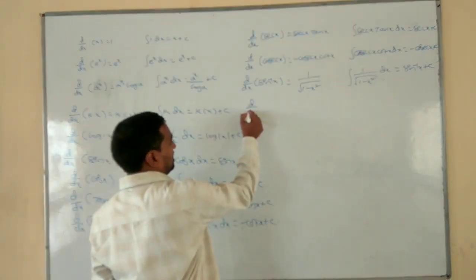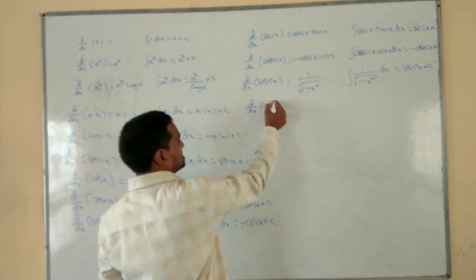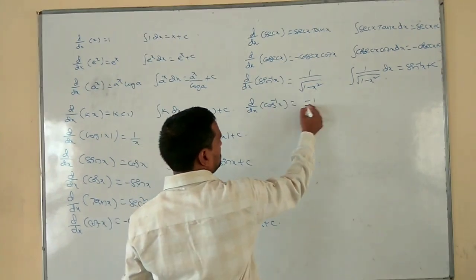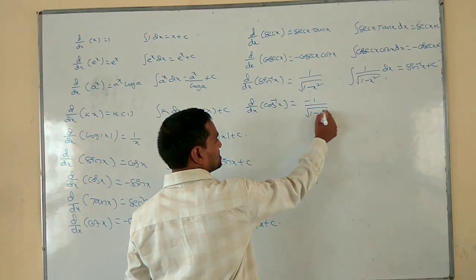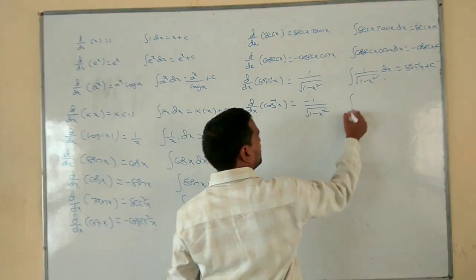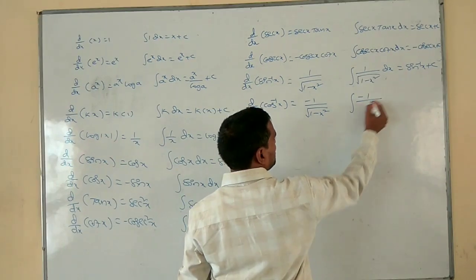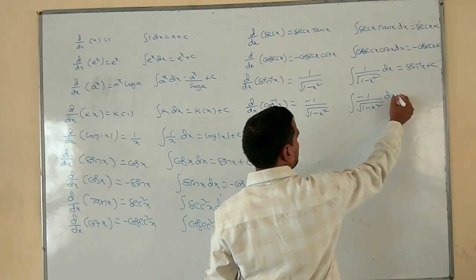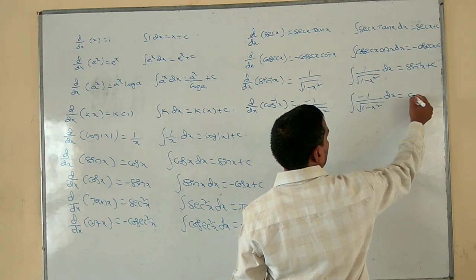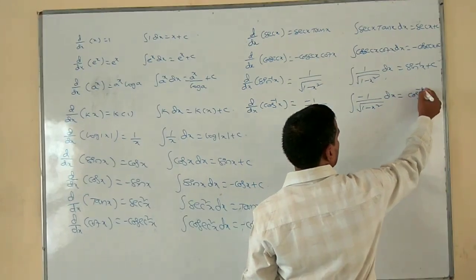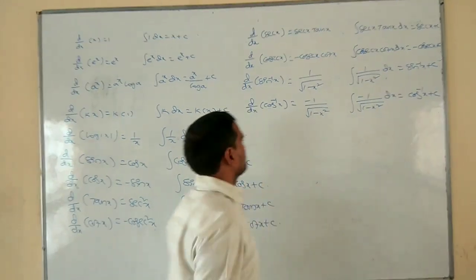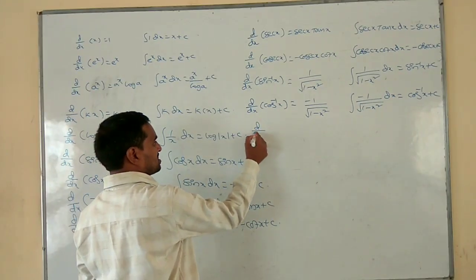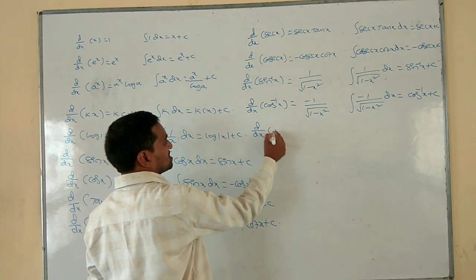dy/dx of cos inverse x is equal to minus 1 by root of 1 minus x square. Integration of minus 1 by root of 1 minus x square dx equal to cos inverse x plus c. dy/dx of tan inverse x.